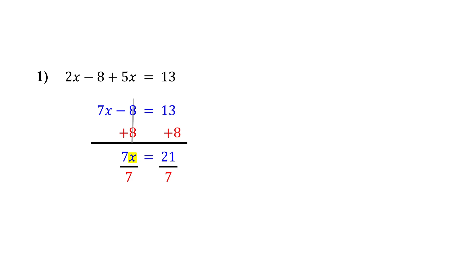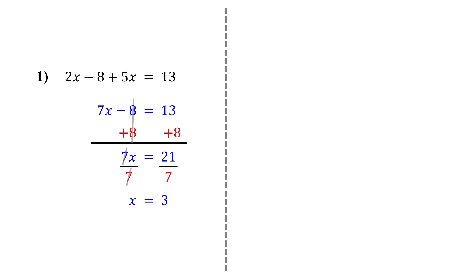We divide both sides to keep our equation balanced. On the left, 7 divided by 7 is 1, so the 7s cancel out, leaving x by itself. On the right, 21 divided by 7 is 3. So the solution to this equation is x equals 3.